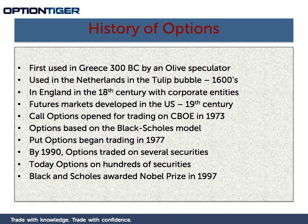Since then, there have been several uses of options, although not all are documented very clearly. We know that options were used in the tulip bubble in the Netherlands in the 1600s. In England, there was also an attempt to use option-like instruments associated with corporate entities. In the US, futures markets developed in the 19th century. And in 1973, call options started trading on the CBOE, based on what is called the Black-Scholes pricing model. Put options began trading in 1977.